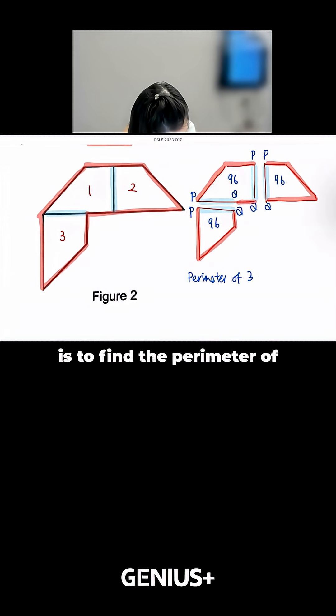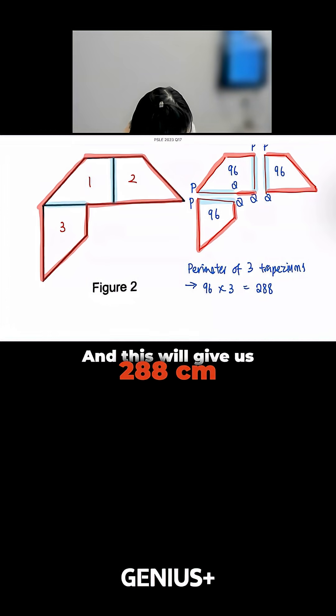So what we'll first do is to find the perimeter of 3 trapeziums. And this will give us 288.